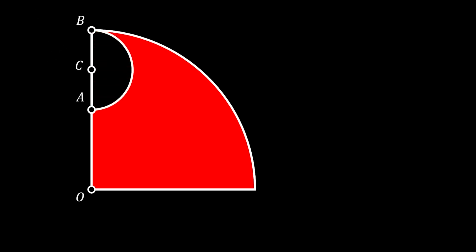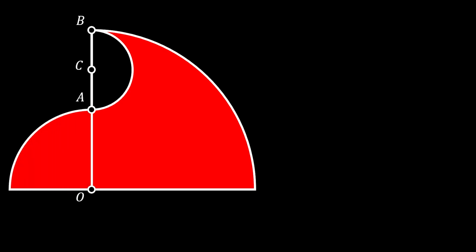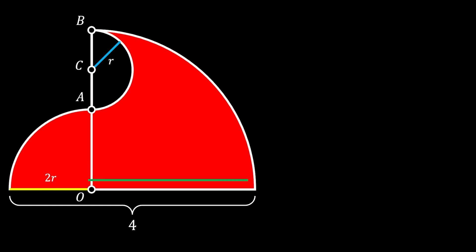Now let's construct our half circle and mark its center as C as before. Then from point A let's again construct our smaller quarter circle. If we mark the radius of our smaller half circle as r, that means the radius of our quarter circle must be twice that, so 2r. And it also means the radius of our bigger quarter circle is equal to 4r, since that radius is twice as big as the radius of the smaller quarter circle. For better understanding, let's again mark all our circular segments as A1, A2, and A3. The red shaded area will equal the sum of the areas of these two quarter circles minus the area of our half circle.